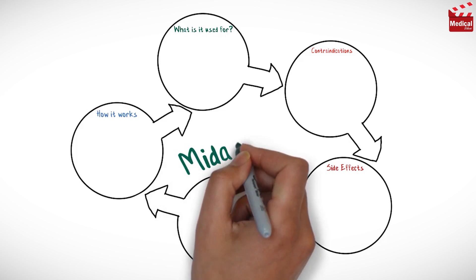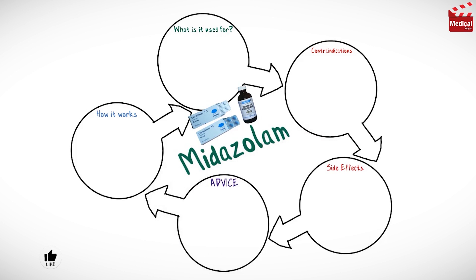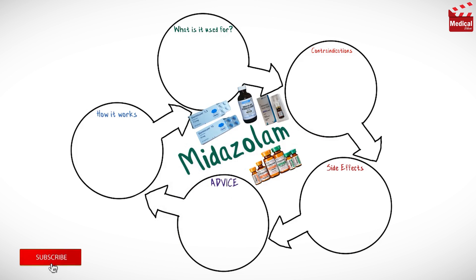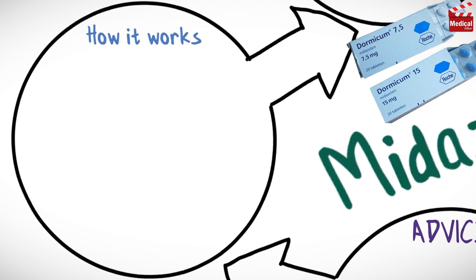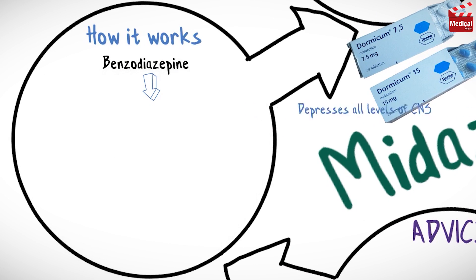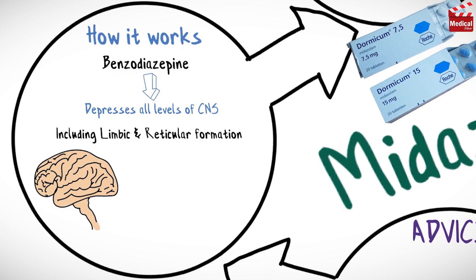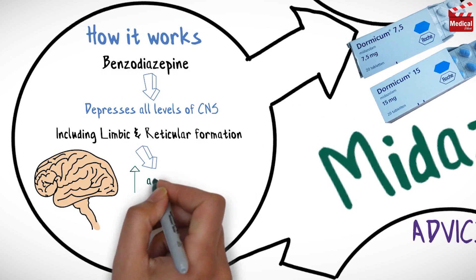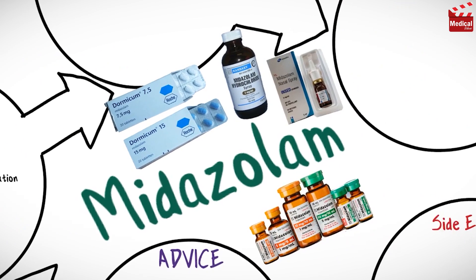In this video we'll briefly discuss what midazolam is, how it works, what it's used for, side effects, contraindications, and precautions. Midazolam belongs to a category of medications called benzodiazepines. It depresses all levels of the CNS, including the limbic and reticular formation, probably through increased action of GABA, which is a major inhibitory neurotransmitter in the brain.